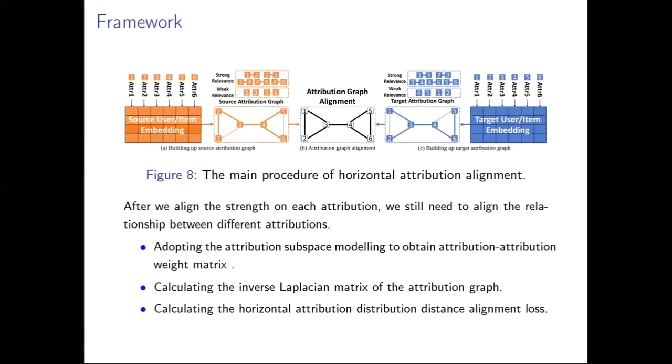Then, we introduce the horizontal attribution alignment algorithm. Previous researchers point out that aligning the corresponding relevant attribution relationship, for example, adopting the correlation alignment with covariance matrix can better enhance the model performance. However, covariance is hard to capture the complex and nearly hidden relationship between different attributions under this problem. Therefore, we propose a horizontal attribution alignment with attribution subspace modeling and attribution graph alignment methods. We first use attribution subspace modeling to build the attribution graph, exploring the horizontal and topological structure between the different attributions.